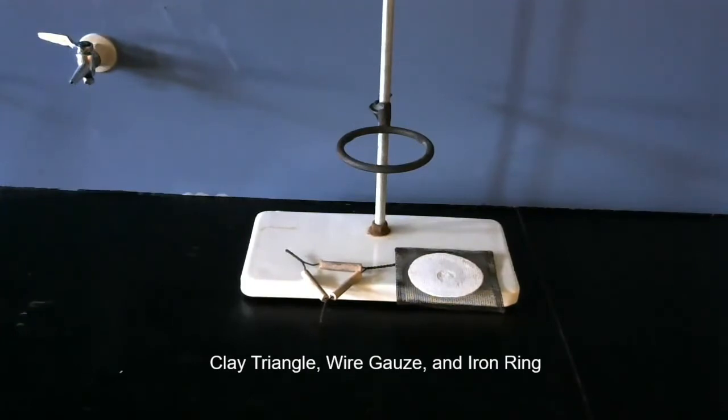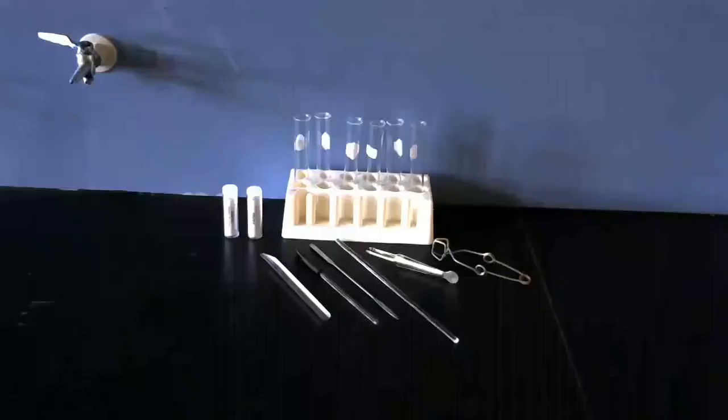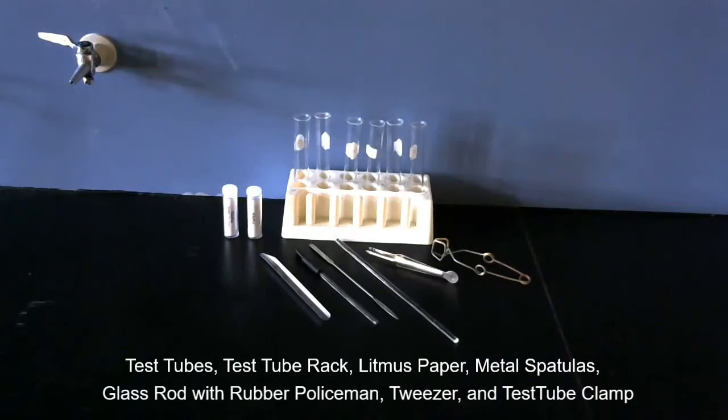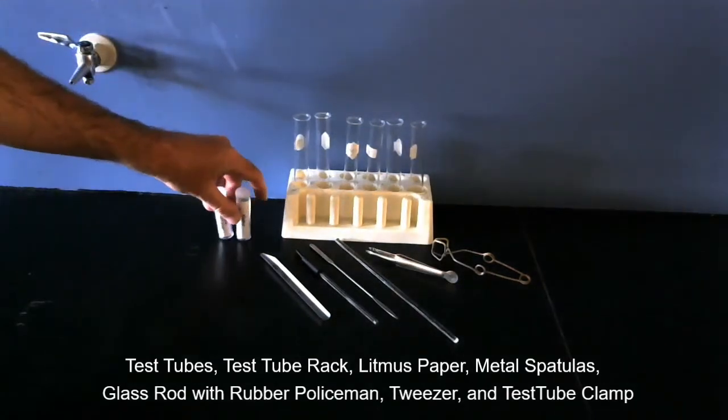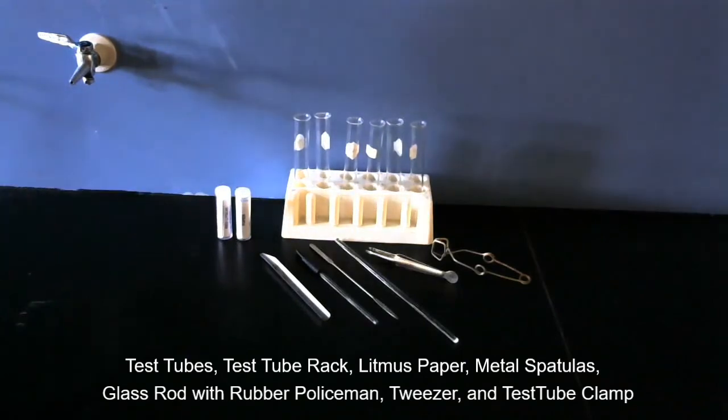What we've got there is a test tube rack in the back with test tubes. We got red and blue pH paper that come in little tubes like that. If the blue turns red, it's an acid. If the red turns blue, it's a base.